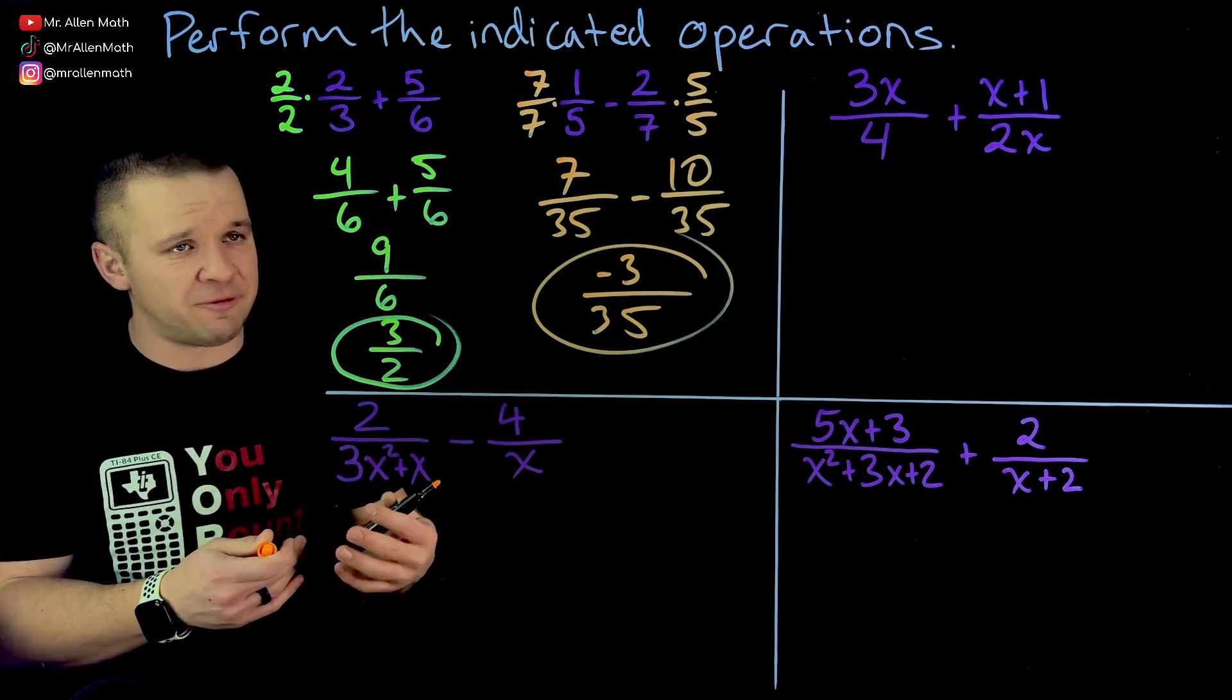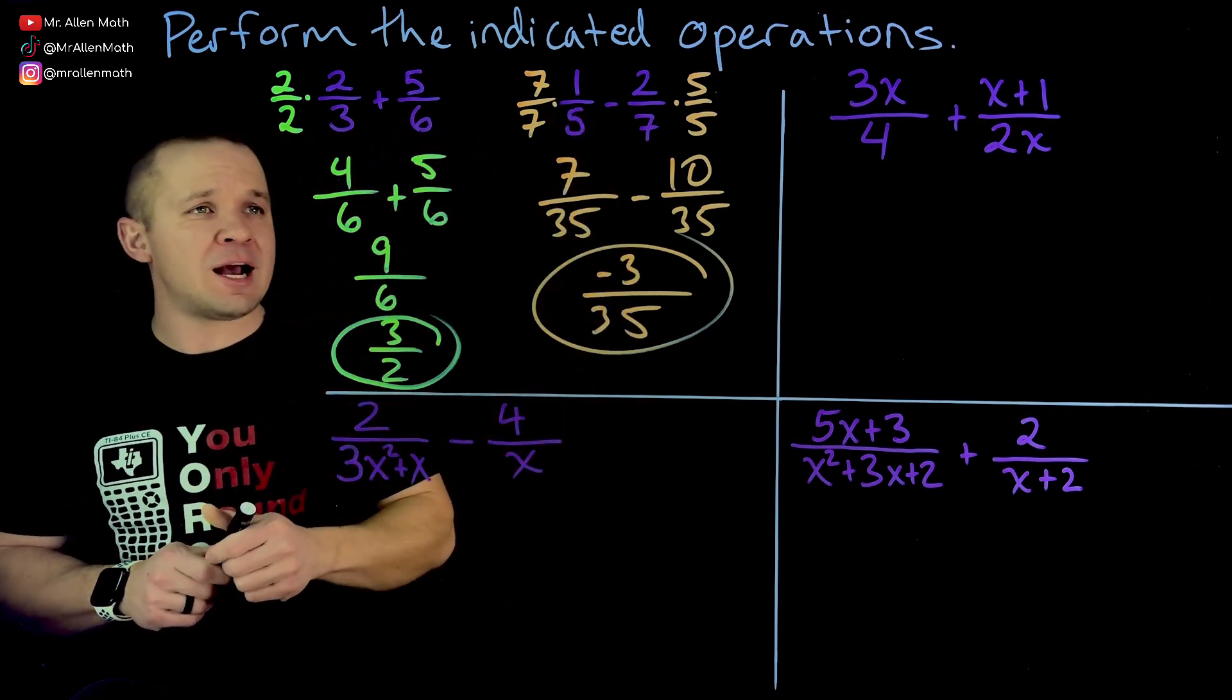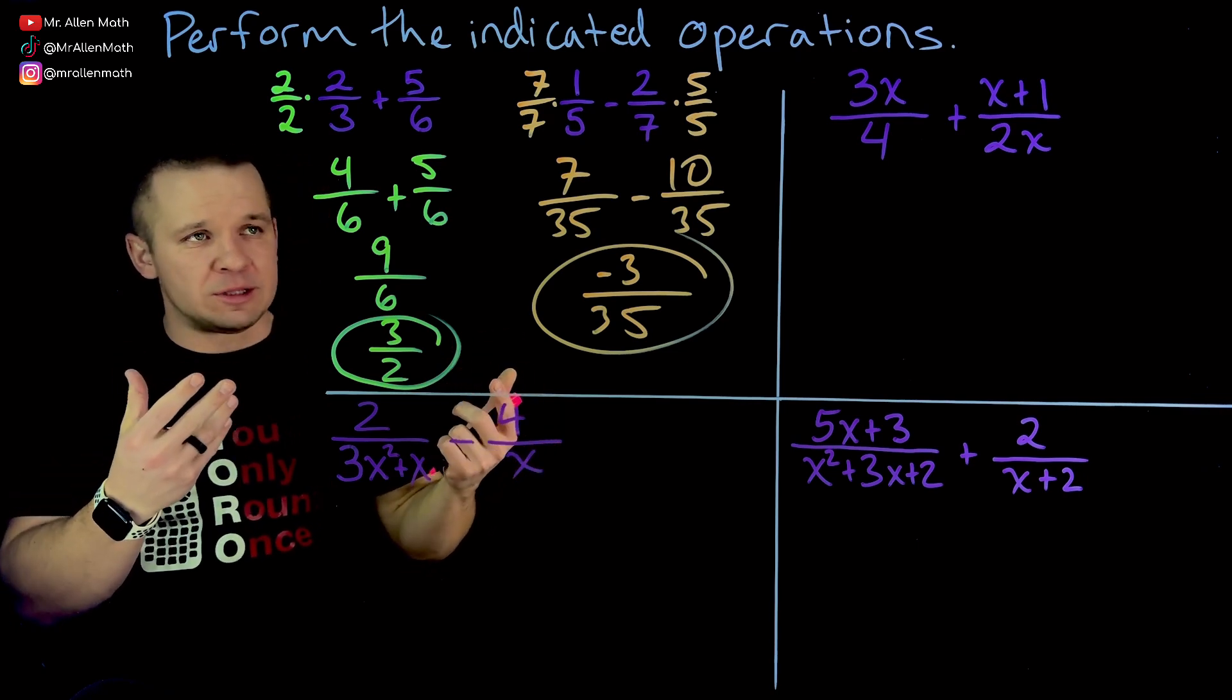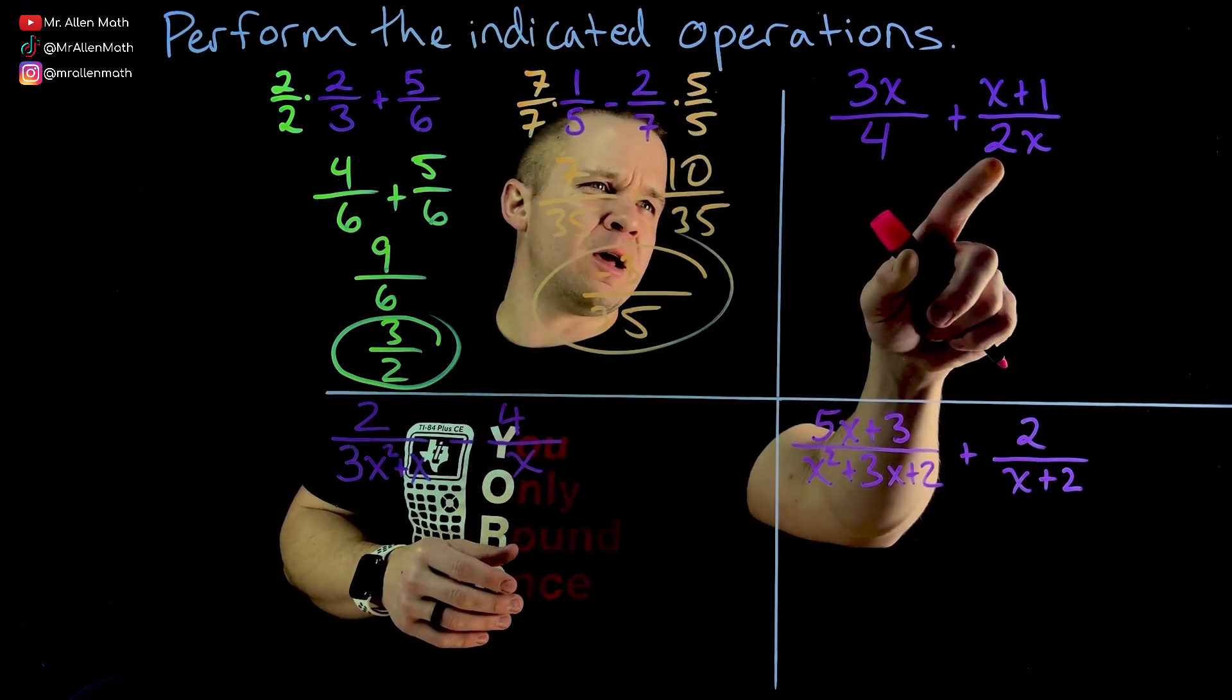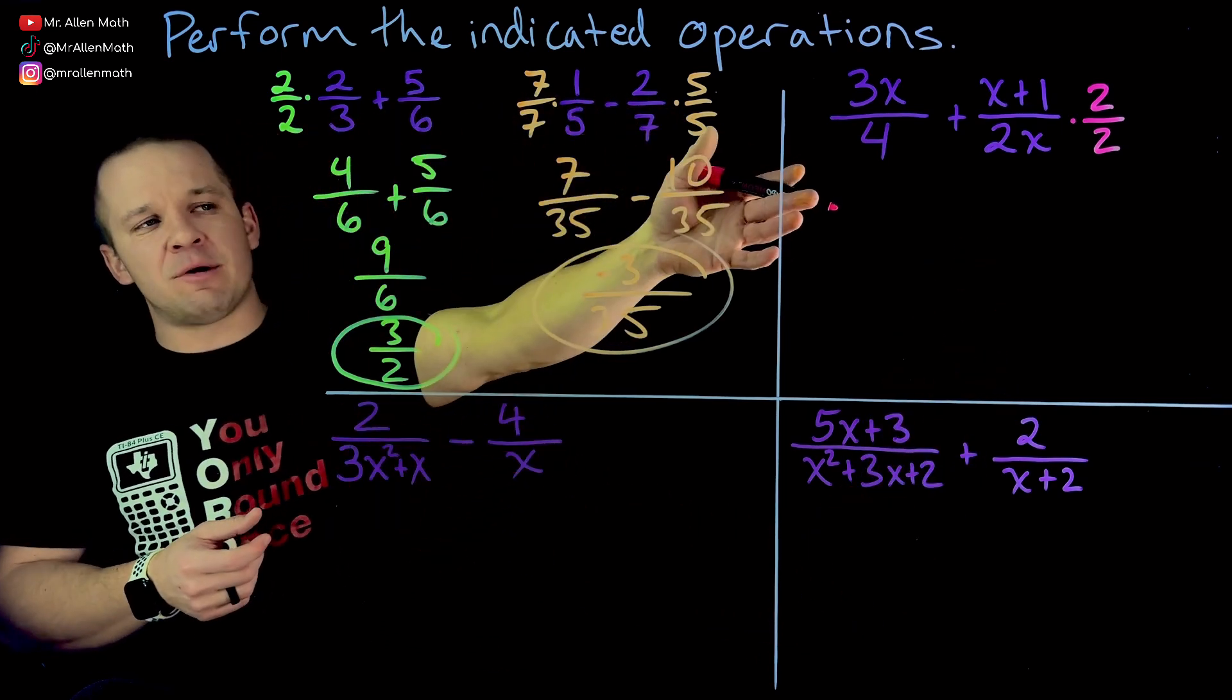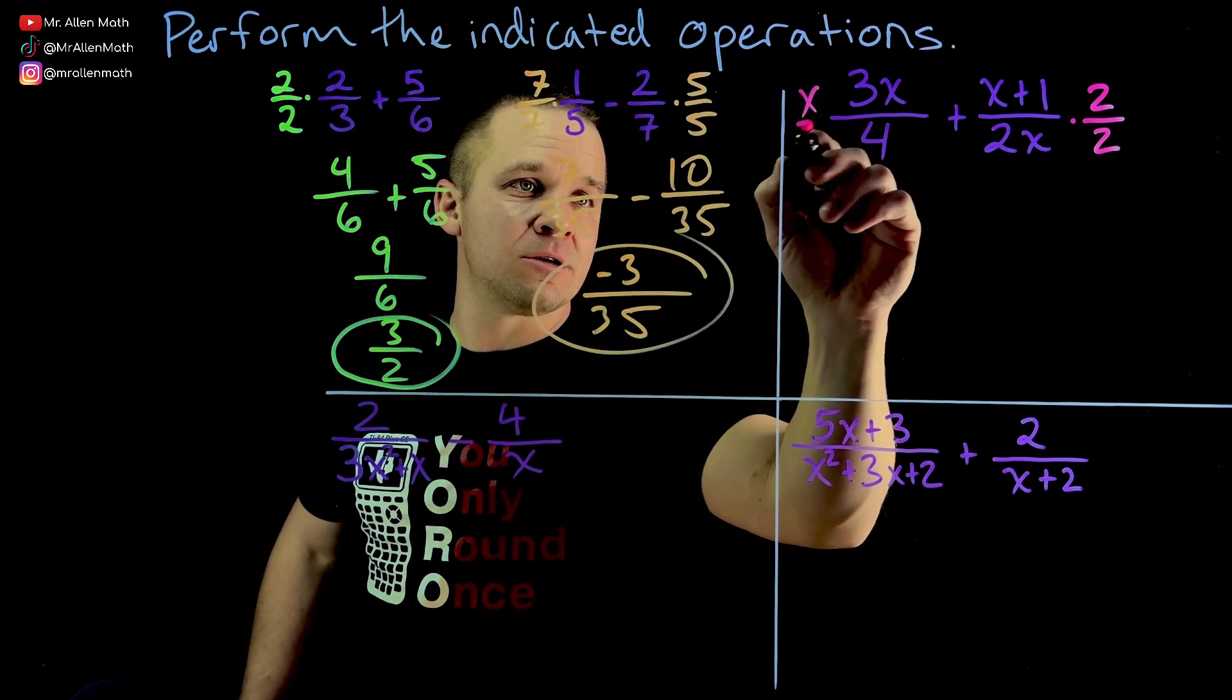We'll do any kind of simplifications we can, and then we're done. Cool. So let's do that over here on the right-hand side. I've got three X over four and I have X plus one over two X. So what do I do with that? Well, what do these things have in common? Well, two and four, couldn't I make this into a four by multiplying by say two over two? Absolutely. But that would make that denominator for X. Does this one need an X? Yeah. The denominator does not have an X. So I'll multiply this by X over X.